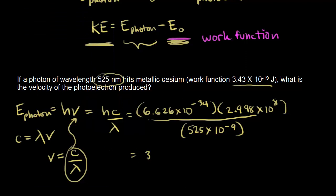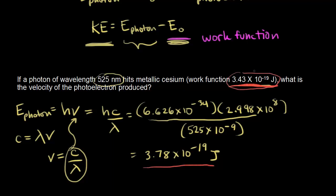So the energy of the photon is 3.78 times 10 to the negative 19 joules. That energy is greater than the work function, which means this is a high-energy photon — it's able to knock the electron free. Remember, the work function is the minimum amount of energy needed to free the electron, and we've exceeded that minimum. So this photon has high enough energy to produce a photoelectron.